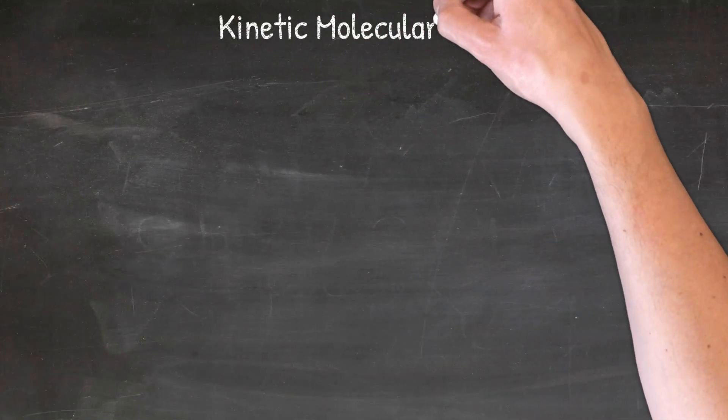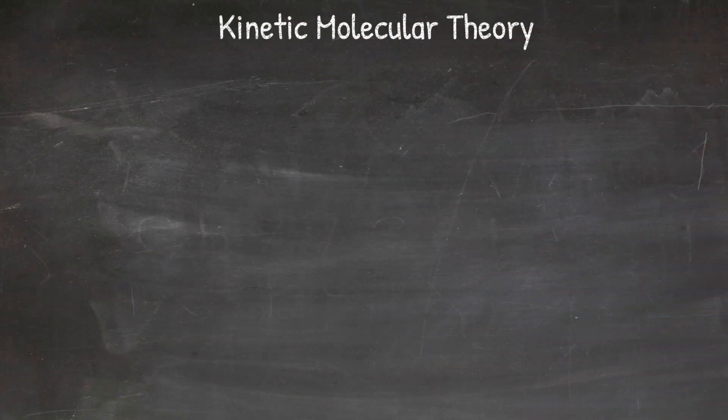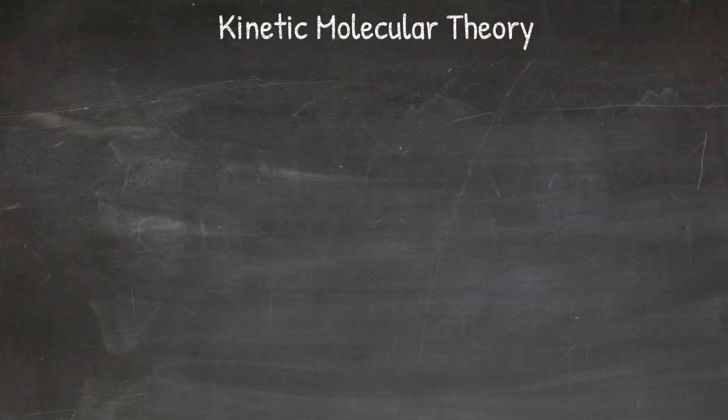The kinetic molecular theory is made up of five components. You can think of these as rules that help us better understand and explain how and why gas molecules behave the way they do. Here are the five rules or components to the kinetic molecular theory.